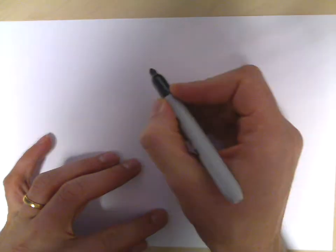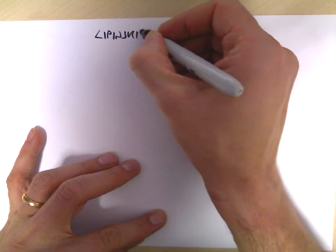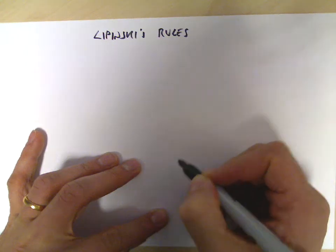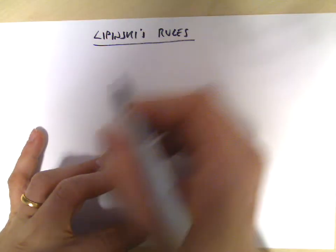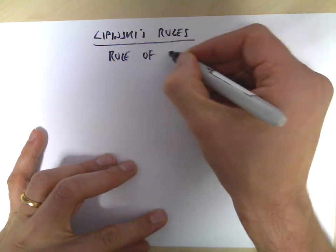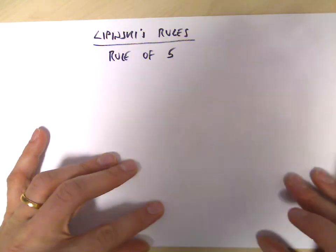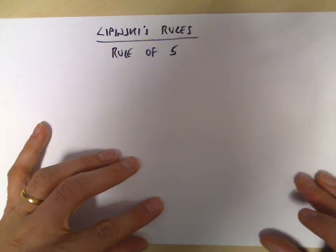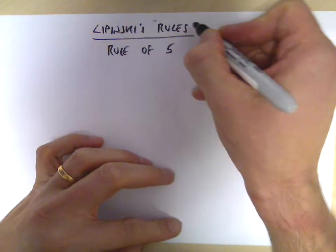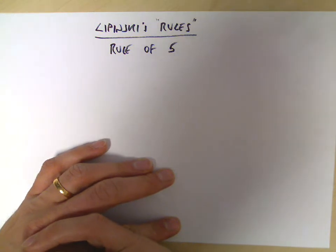Well, there is such a set of rules. These are known as Lipinski's rules, or more colloquially as the rule of five — and I'll explain why that is in a moment. I'm going to put 'rules' in inverted commas because they're not strict rules that must be completely obeyed all the time.